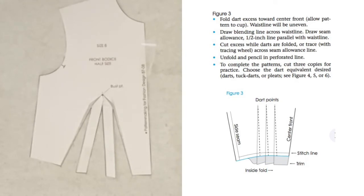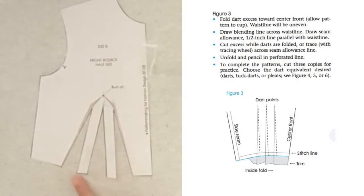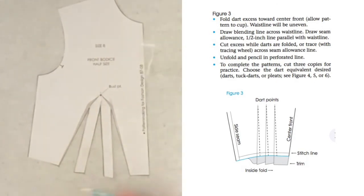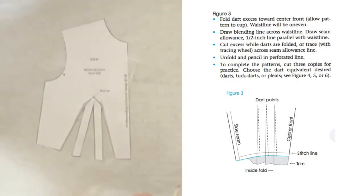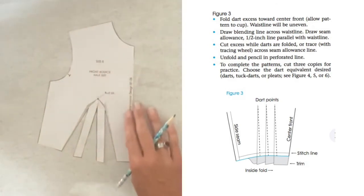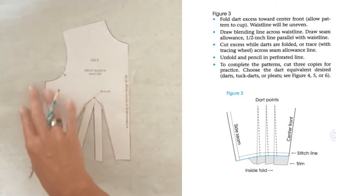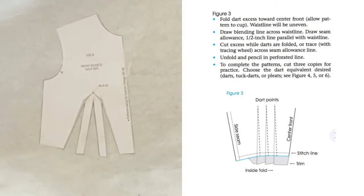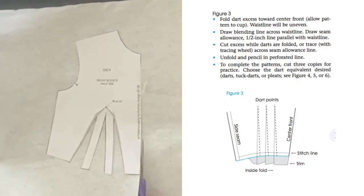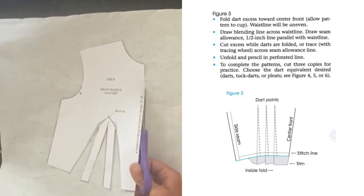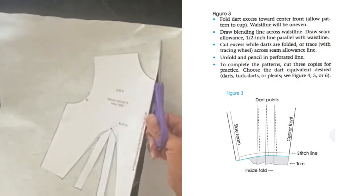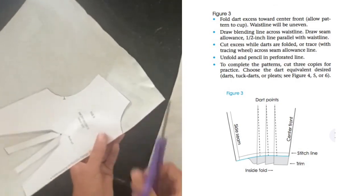That's basically it. Then it just wants us to add our seam allowances and cut from the paper. They do a nice job illustrating folding this dart together and then drawing in the waistline. I think I'll go ahead and demonstrate that as well. I'm going to decide not to add seam allowances around my pattern because I really like to add them on the muslin for these notebook samples, just so students can see where the sew line is.